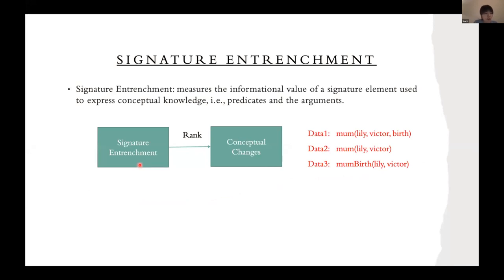In artificial agents, concepts are written with a signature containing predicates and their arguments. For example, in data one, we have predicate mom which has three arguments, and we can interpret it like Lily is Victor's birth mom.